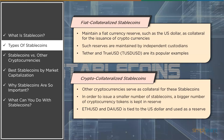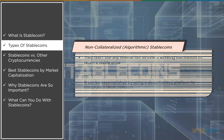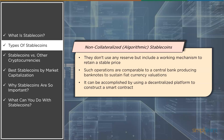The last type is non-collateralized or algorithmic stablecoin. These don't have any reserves but they do have a working mechanism to keep the price stable, similar to that of a central bank. The dollar-pegged coin, for example, employs a consensus method to increase or reduce token production based on demand. Such practices can be compared to a central bank producing banknotes to sustain fiat currency valuations. This is achieved by developing a smart contract on a decentralized platform that can execute independently.